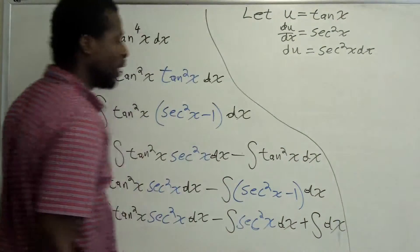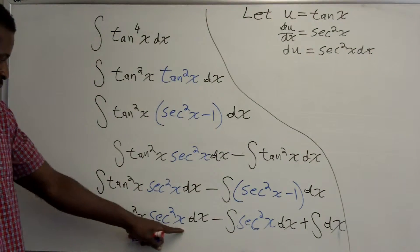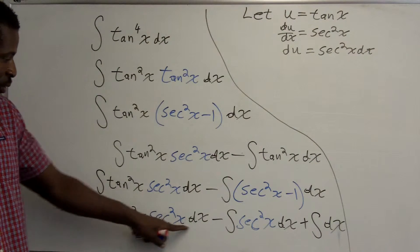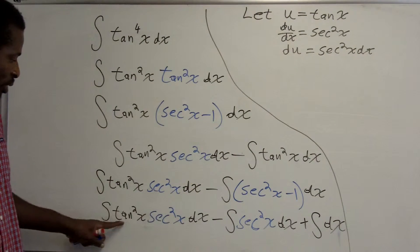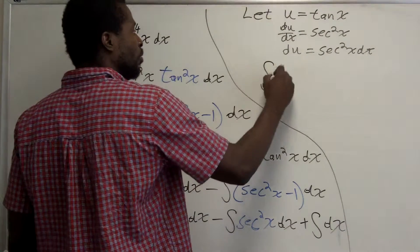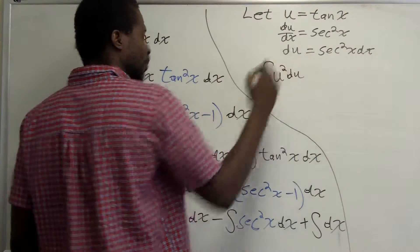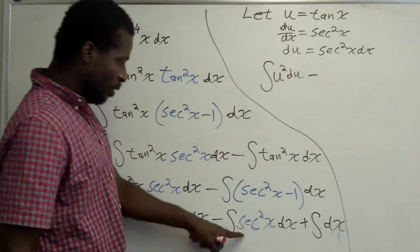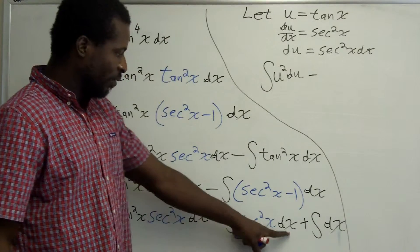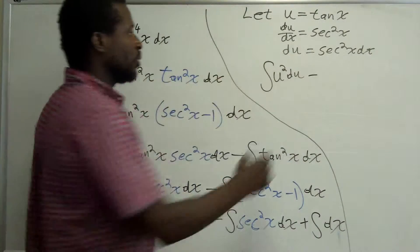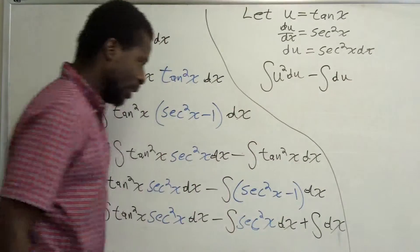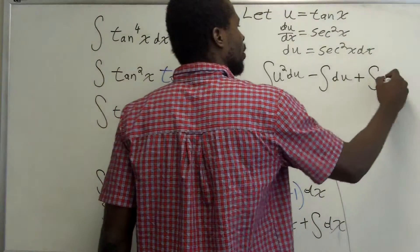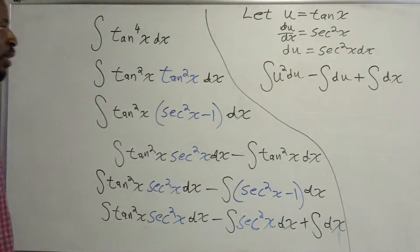This first integral becomes the integral of u squared du, since tangent is u and secant squared of x dx is du. The second integral becomes negative the integral of du, since secant squared of x dx is du. The last one is the integral of dx — no u-substitution necessary there.